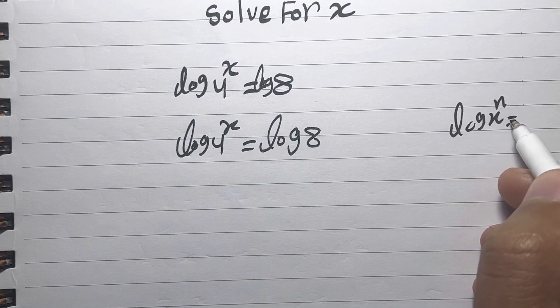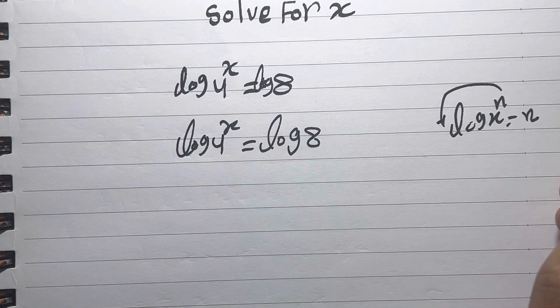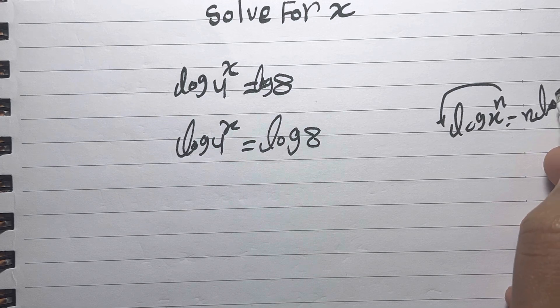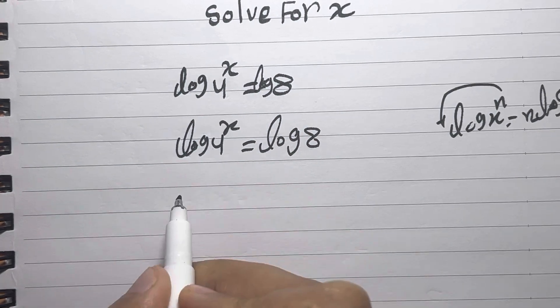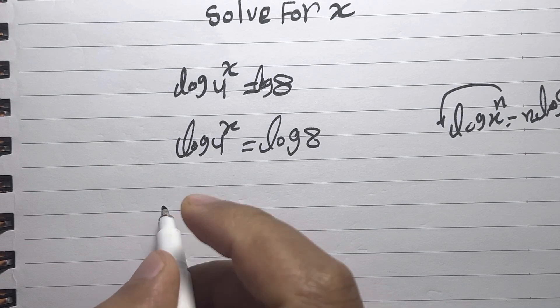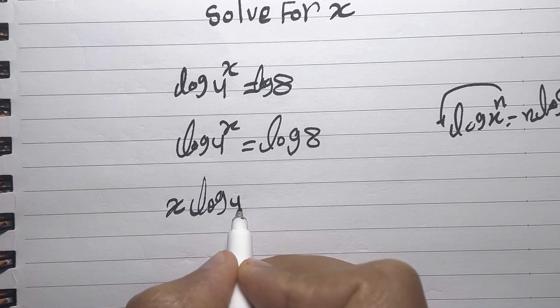We are going to apply that here. We are going to put the x down, so it will be x times log 4 equals log 8.